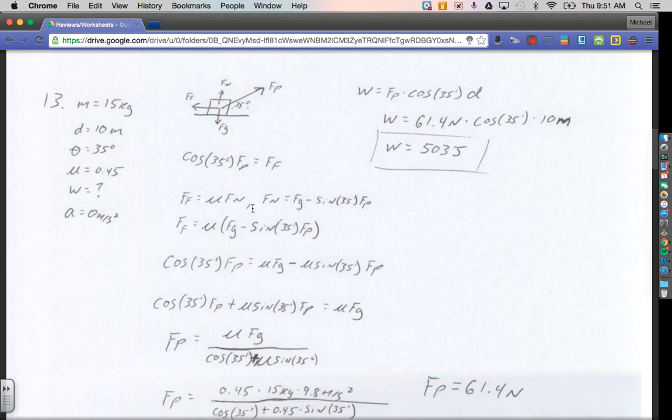Finally, number 13, the most challenging work problem on here. A rope is used to pull a metal box 10 meters across the floor at a constant speed. The rope is held at an angle of 35 degrees. Given that the coefficient of friction between the box and the ground is 0.45, how much work is done pulling the box across the floor if the mass of the box is 15 kilograms?